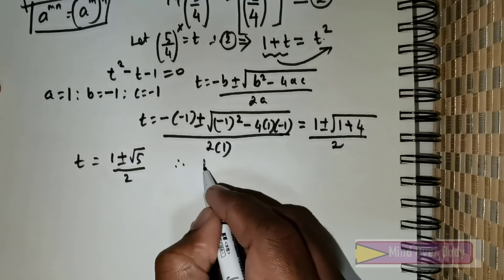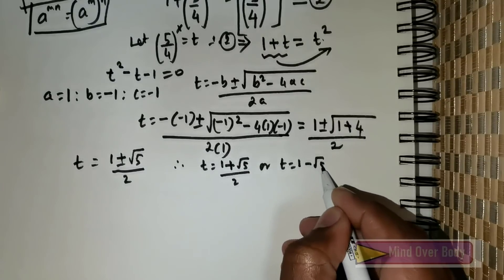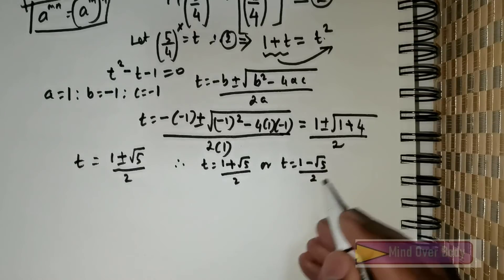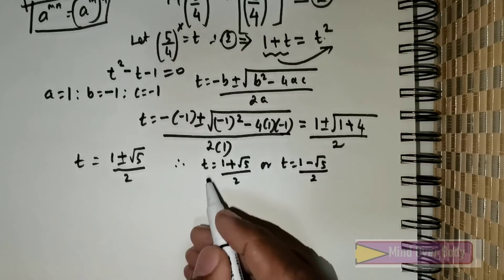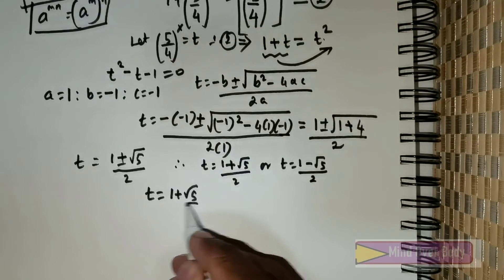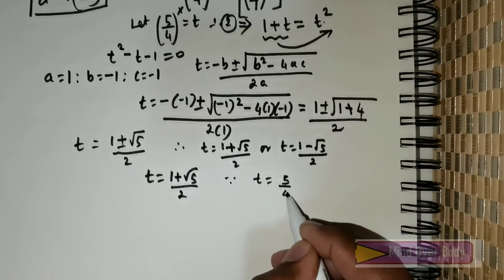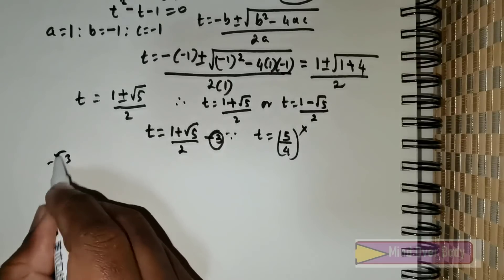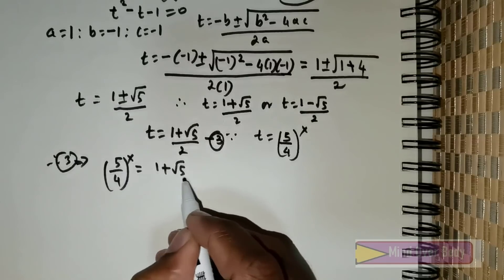So t has two values: t equals (1 plus root 5) over 2, or t equals (1 minus root 5) over 2. I will not use the second value because it leads to a negative quantity. Since t equals (5/4)^x, I use t equals (1 plus root 5) over 2. Therefore, (5/4)^x equals (1 plus root 5) over 2.